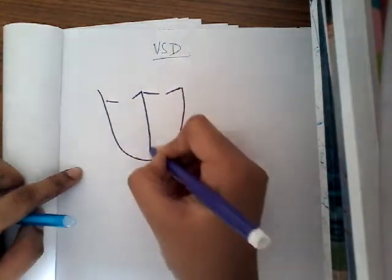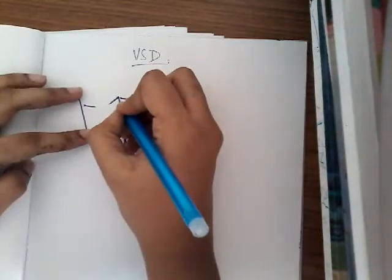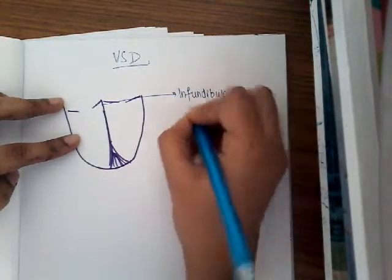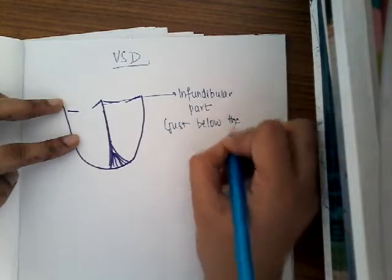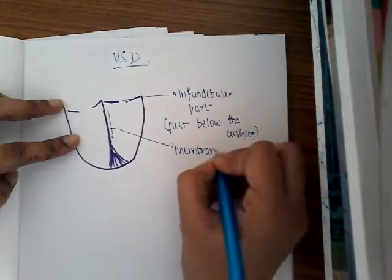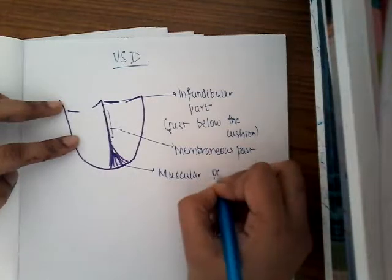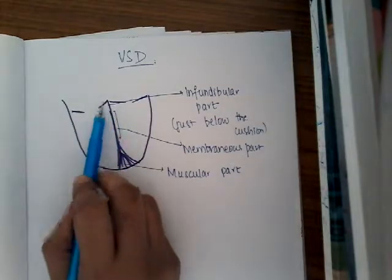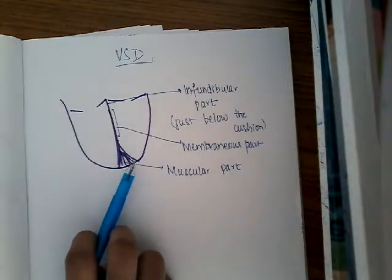This is the ventricle with the tricuspid and bicuspid valves and the ventricular valve. The part just below the valve is called the infundibular part. A little lower is the membranous part, and below that is the muscular part. There are mainly three types of ventricular septal defects: infundibular, membranous, and muscular.